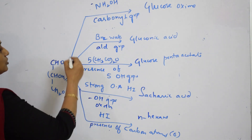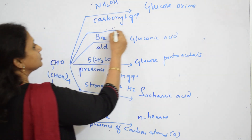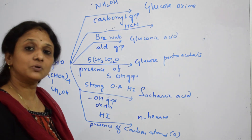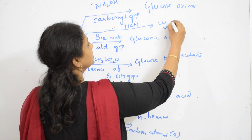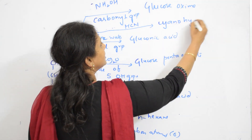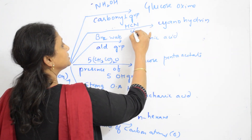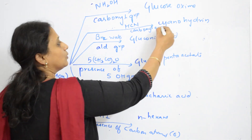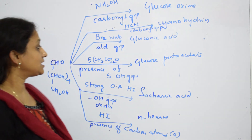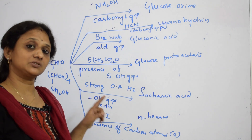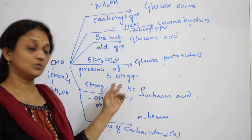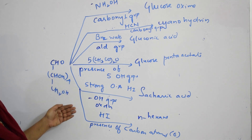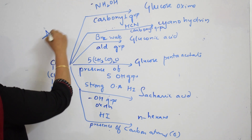To summarize: the glucose pentaacetate reaction explains the presence of OH groups in glucose. If asked which reaction proves the presence of OH groups, the answer is the glucose pentaacetate reaction with acetic anhydride. These six reactions together confirm the structural features of glucose: the aldehyde group, five hydroxyl groups, a primary alcohol, and six carbon atoms. Please note this — it is very important for exam questions on glucose reactions.